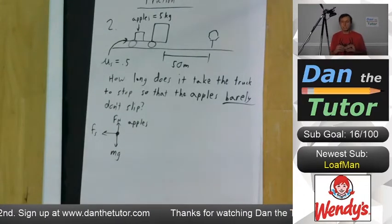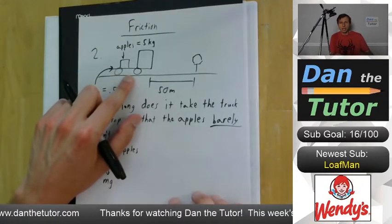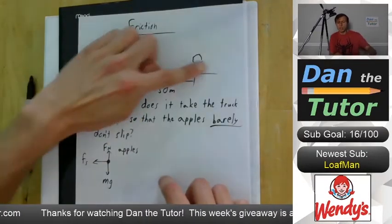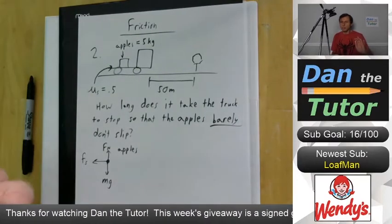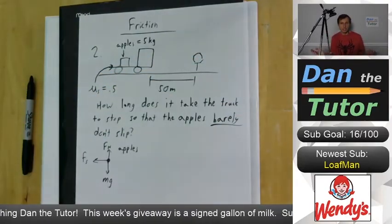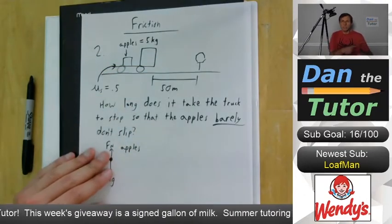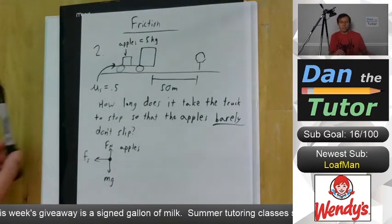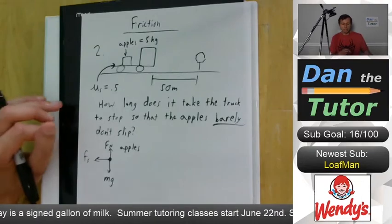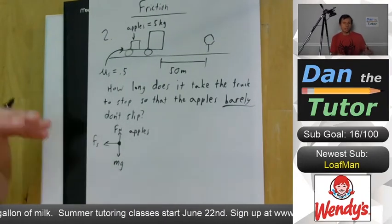If that explanation didn't make sense, think of it this way: what's the net force on the truck as it's slowing down — left or right? If you say it's to the right, you're saying the truck is accelerating forward, speeding up into the stop sign, which doesn't make sense. For the truck to slow down, acceleration must point to the left. So the force on the apples also causes it to slow down and points to the left. It's static friction because the apples are not moving.